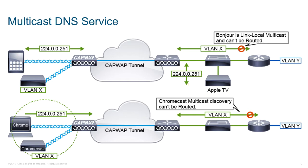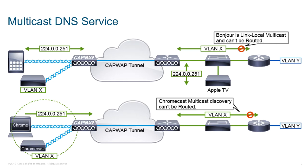Each query or advertisement is sent to the Bonjour multicast address for delivery to all clients on the subnet. The addresses used by the Bonjour protocol are link-local multicast addresses and are only forwarded on the local layer 2 domain. Routers cannot use multicast routing to redirect the traffic because the time to live is set to 1, and link-local multicast is designed to stay local by design.